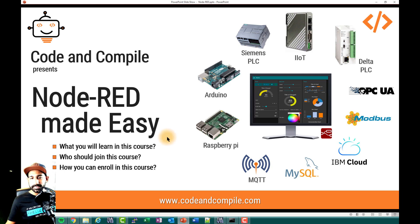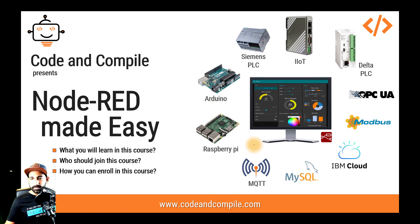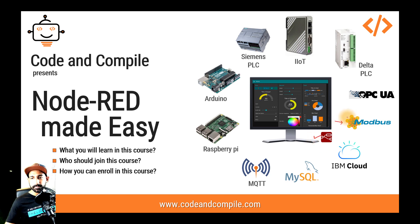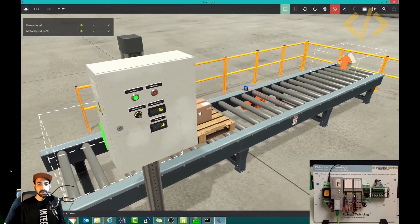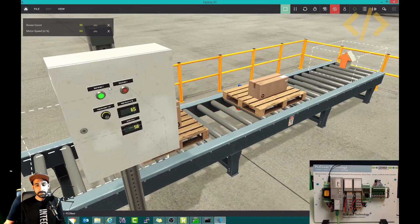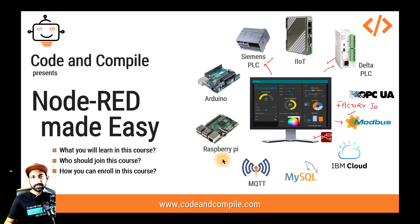I have started with the basic fundamentals. In this course, I have covered Node-RED fundamentals, the Modbus section, how to interact with a Delta PLC, and how to interact with a Siemens PLC. And one more thing I didn't mention: how to interface Node-RED with Factory IO — a software where you can design your own control system, visualize it, and control it with your logic.